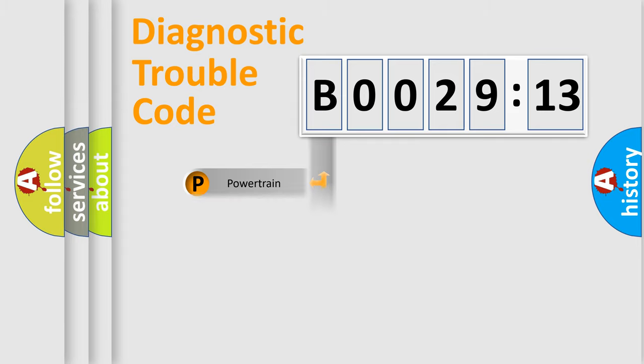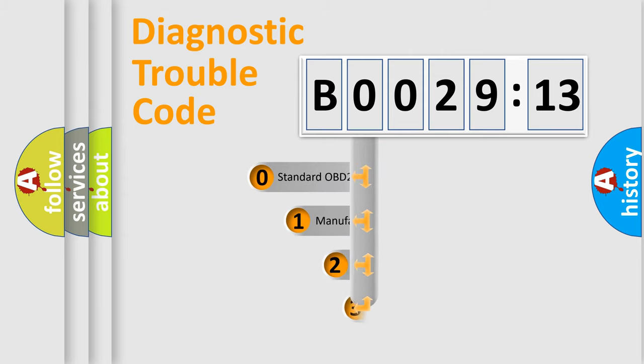Powertrain, Body, Chassis, Network. This distribution is defined in the first character code.